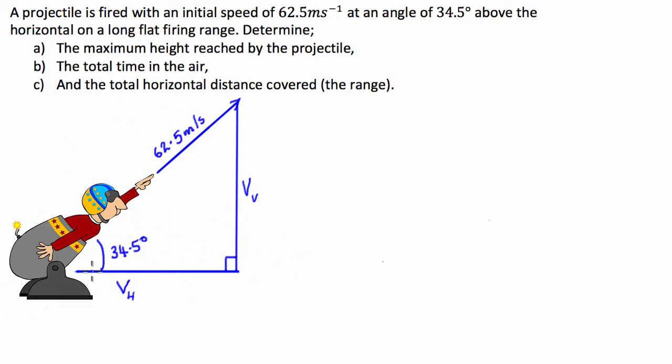Because what we need to do in all projectile motion questions is break up this initial speed into the horizontal and vertical components to solve each of these problems. So to find the maximum height reached by the projectile, we have to first find the vertical component of our initial velocity.